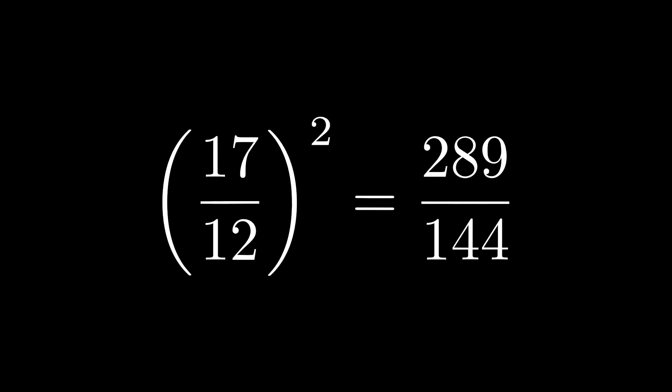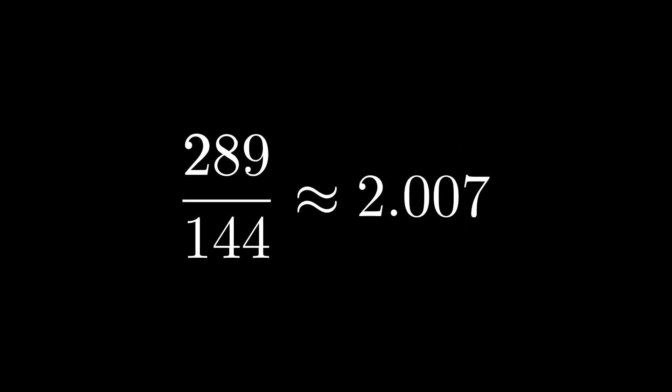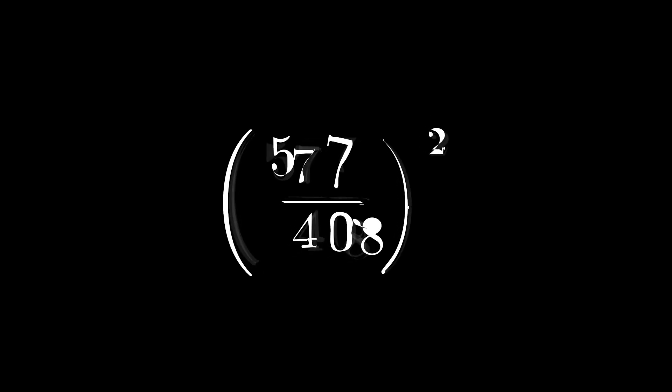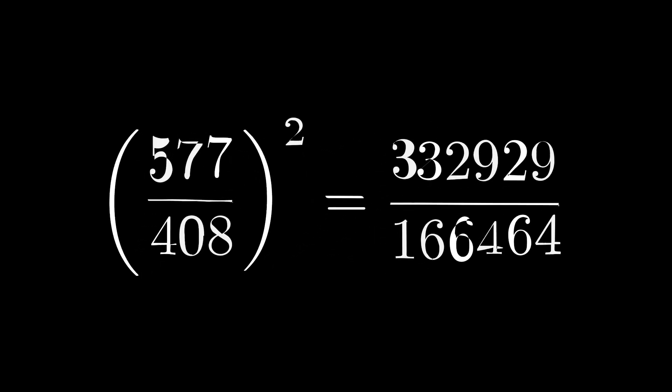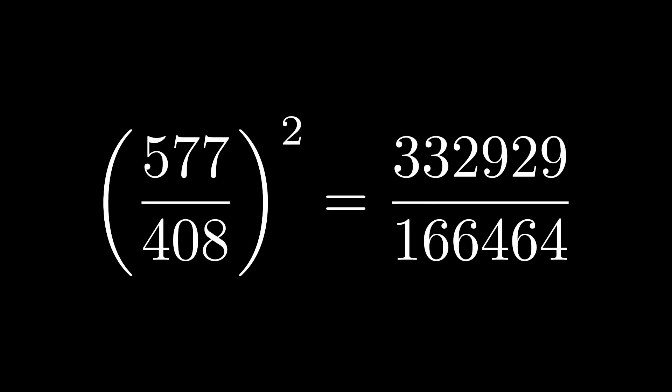Now let's do the next one: 17 over 12. If we square this, we get a number that becomes very, very close to 2. And if we take our very last coefficients, 577 and 408, if we find the ratio of those and then square it, you'll see how unbelievably close it is to 2.